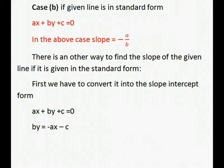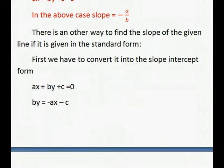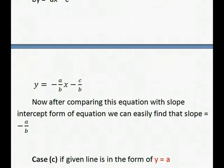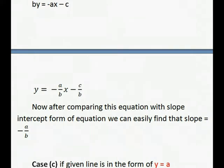So By equals minus Ax minus c. Now divide both sides by B. So y equals minus A upon B times x minus c upon B. Now if we compare it with slope intercept form of equation, we can easily find that slope equals minus A by B.